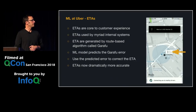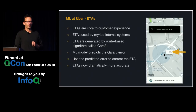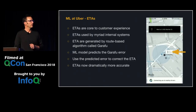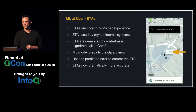ETAs — the estimated time shown in the app when you request a ride — are super important both for the product experience, because incorrect ETAs are quite frustrating, and also because they feed into lots of internal systems. ETAs drive pricing, routing, and a bunch of other things, so having accurate ETAs is super important to Uber, and it's a hard problem.